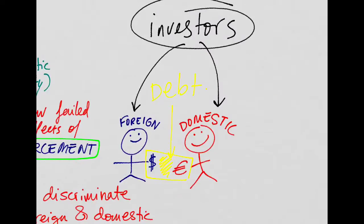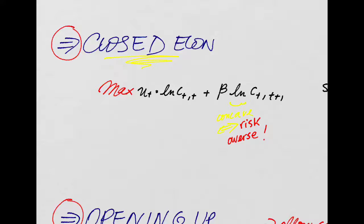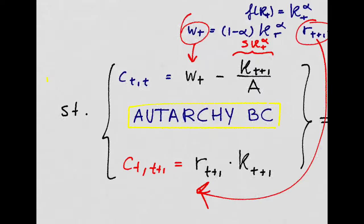Okay, so imagine we have two types of investors: foreign investors and domestic investors. The domestic guy is just maximizing his lifetime utility. When the economy is closed, he's just consuming a fraction of his wages and he's saving the other. The savings, of course, go into capital. When he's old, he consumes the returns that that capital gives him.